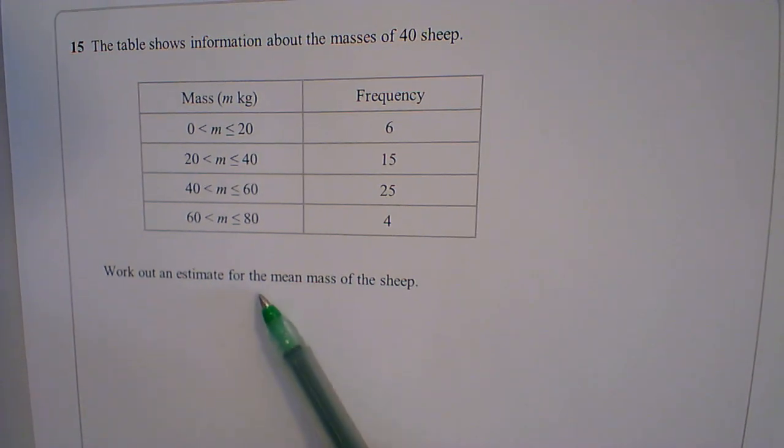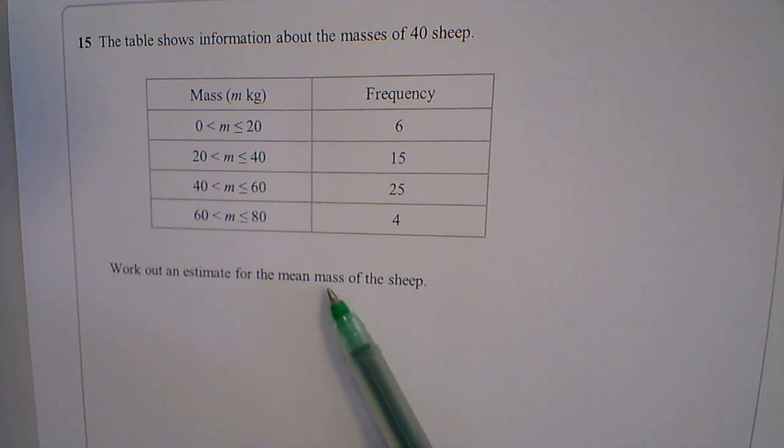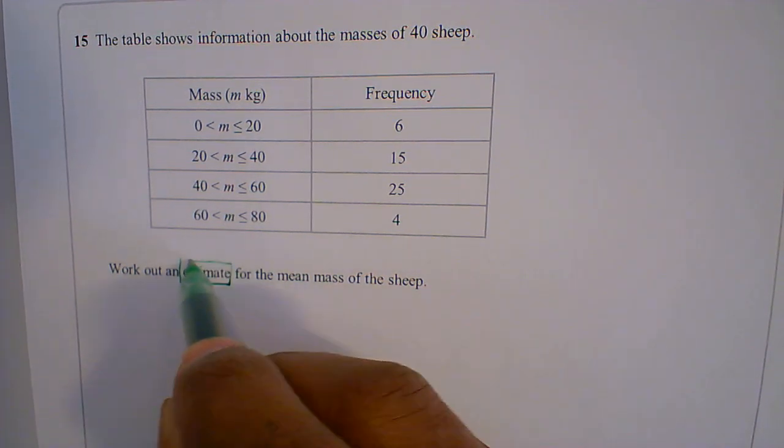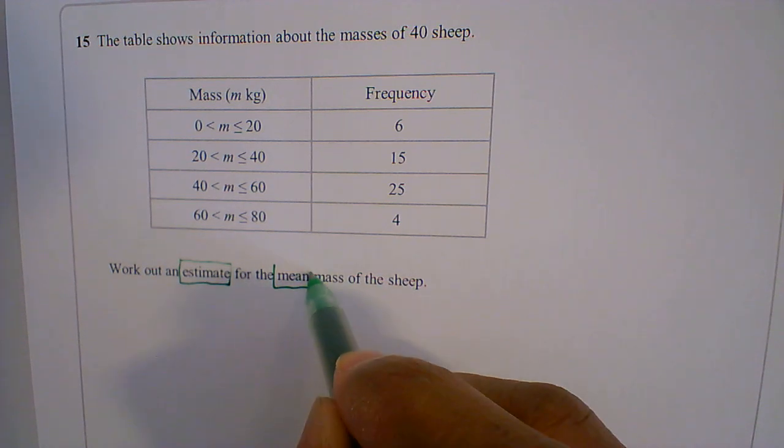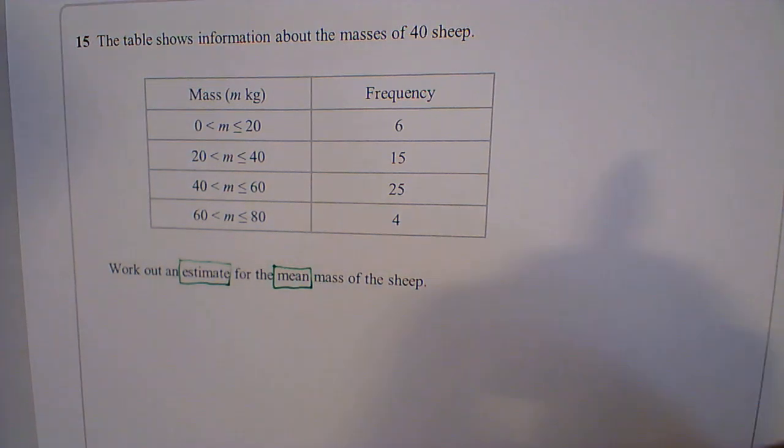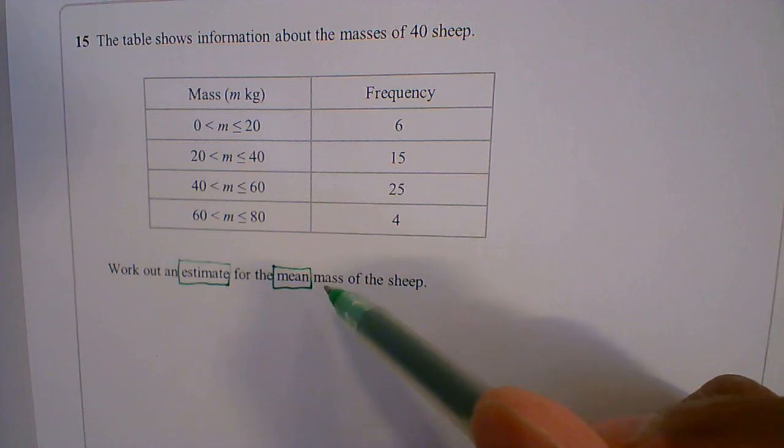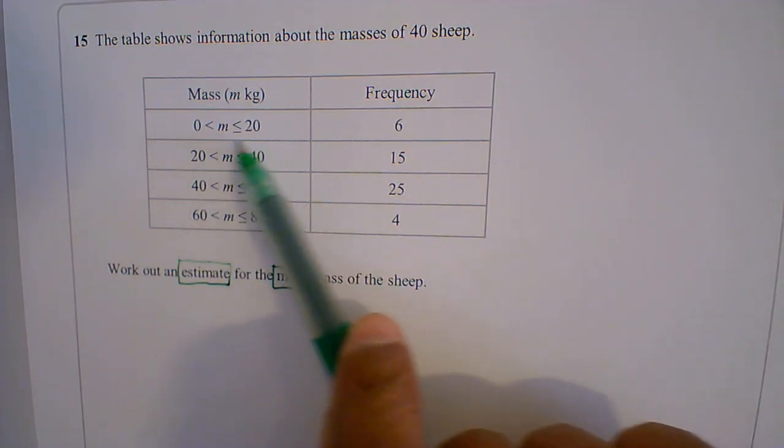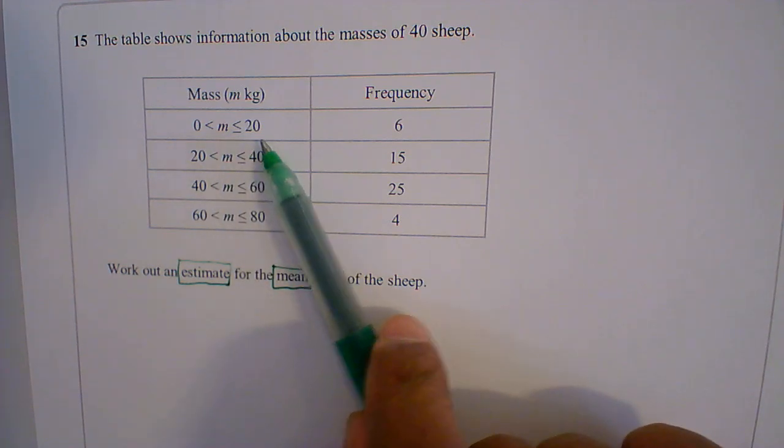Work out an estimate for the mean mass of the sheep. So we have to work out an estimate for the mean. So how do we work out the mean from a table where the information is a class interval grouped data?